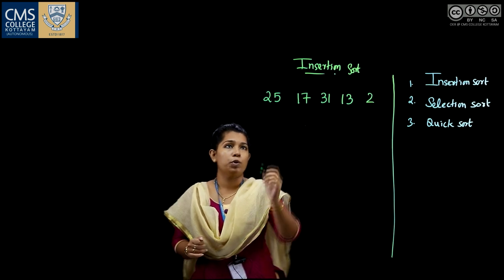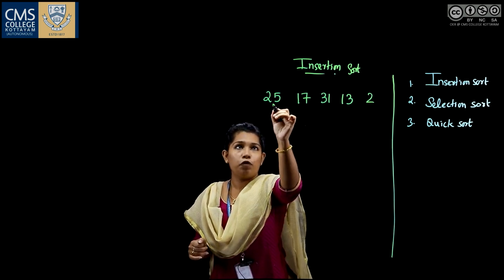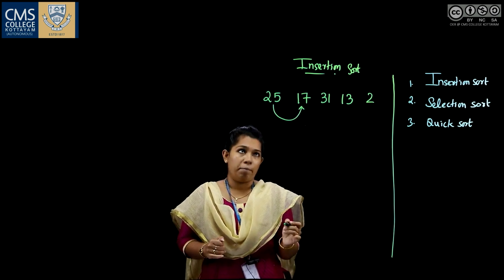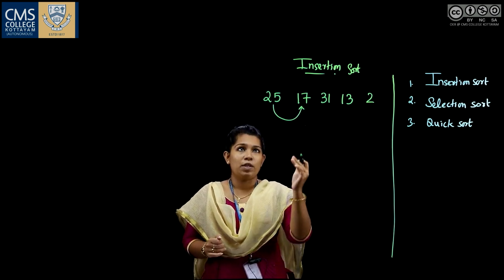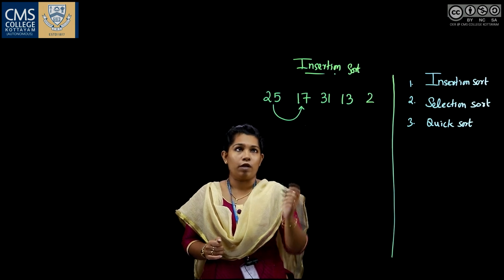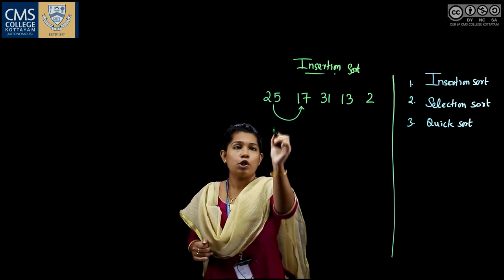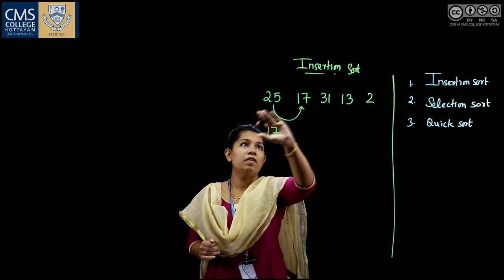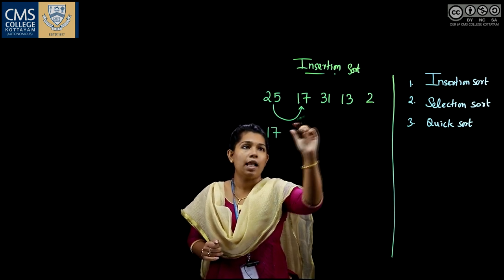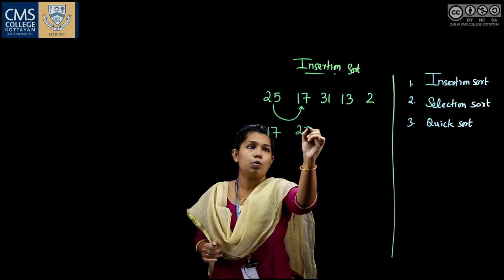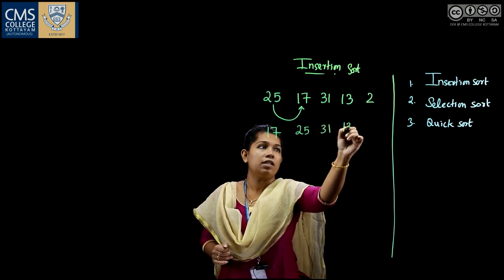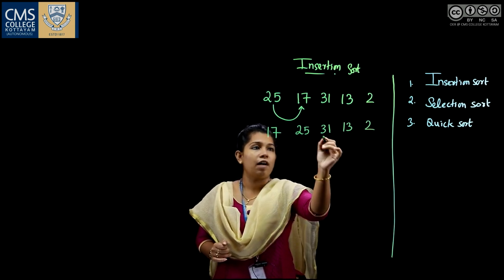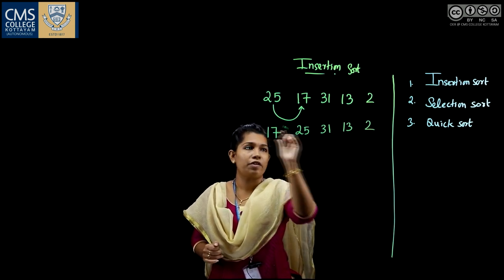First, you have to compare the first element with the second element. When you compare, you find that 17 is less than 25. So bring 17 to the position of 25 and shift the remaining elements towards the left — giving 25, 31, 13, and 2. This is the output of the first iteration.